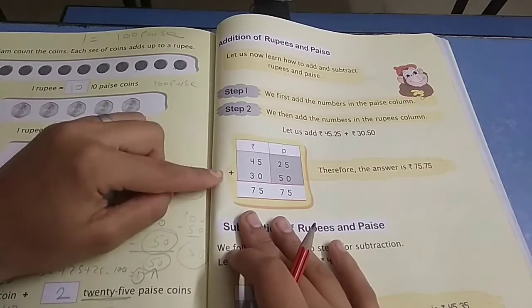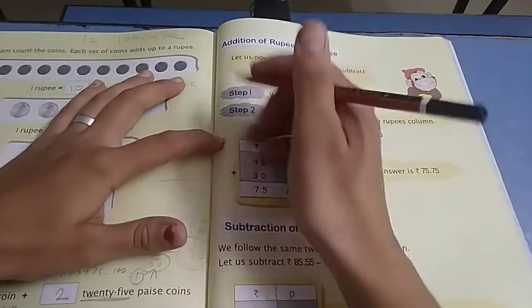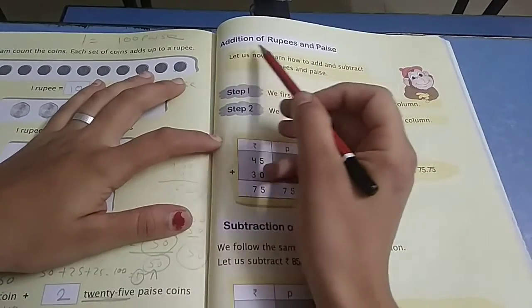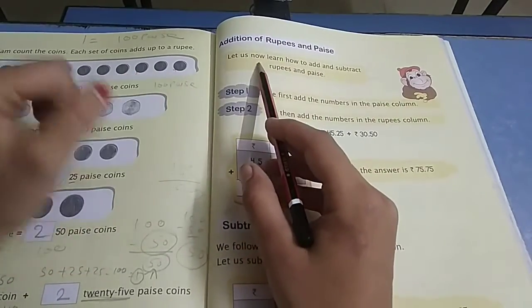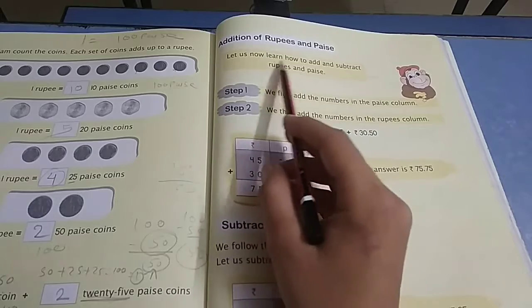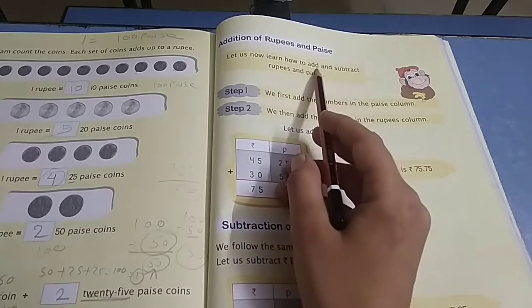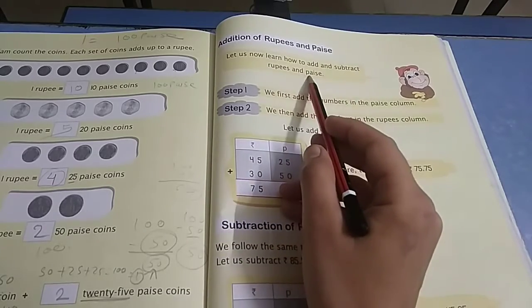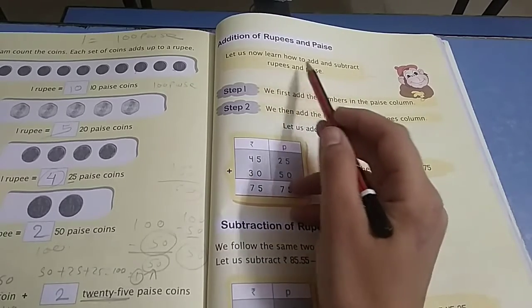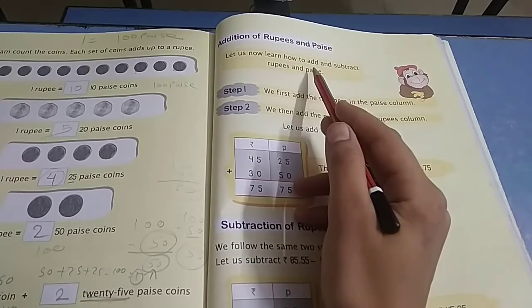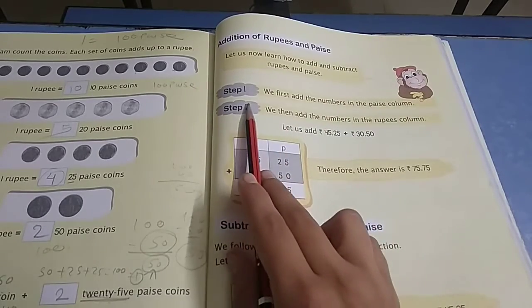Open your maths book and come to page number 173. We start addition of rupees and paisa. Let us learn how to add and subtract rupees and paisa. Step 1, we first add the numbers in the paisa column.